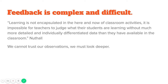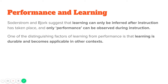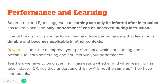The first step is to understand the difference between performance and learning. Soderström and Bjork suggest that learning can only be inferred after instruction has taken place, and that we can only see performance during the act of instruction. The key distinguishing feature is that learning is durable and becomes applicable in other contexts at a later time. It is possible to improve performance while not learning, and possible to learn something while not improving performance at all.